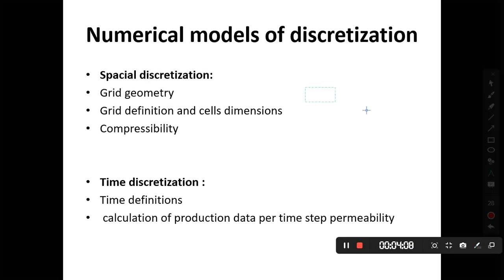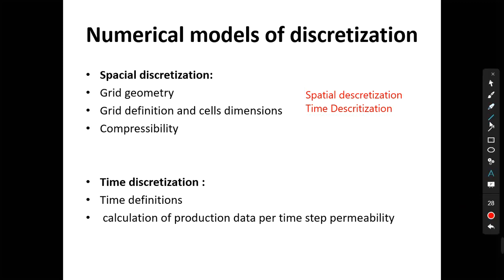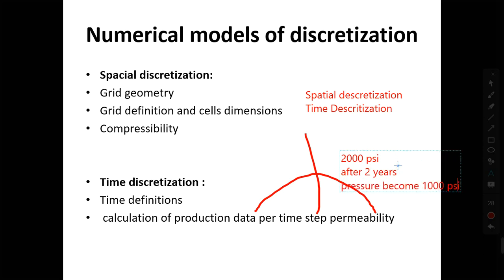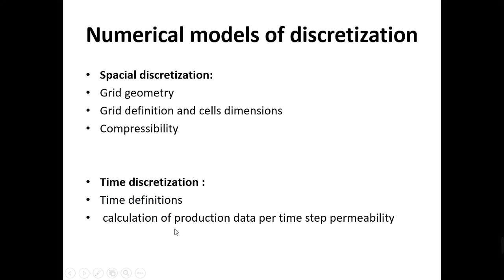We have spatial discretization and we have time discretization. For spatial discretization we define the geometry of the reservoir, cell dimensions, how big or small the cells are, and compressibility. For time discretization — for example, you are producing a well and the pressure right now is 2000 psi, but after two years pressure becomes 1000 psi. The situation is changing with time, so we have to discretize based on time: predict the future and do history matching as well. Time discretization is important.